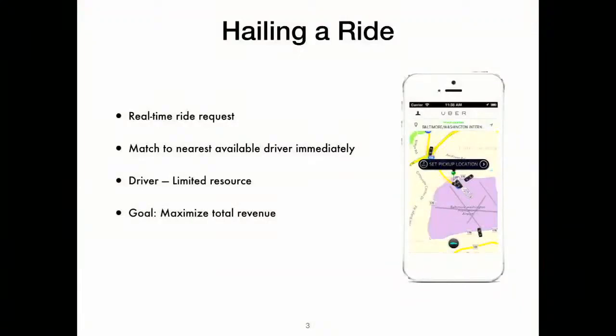Let's say you come to the Baltimore airport and you are looking for an Uber ride. You take up your Uber app and search for drivers. Uber is trying to make a real-time decision — at this point it has a limited pool of drivers, and it needs to match you to one of them. Of course it also has to make other decisions like what price to set. The goal from Uber's point of view is to maximize its revenue, but it's limited by the number of drivers it has, and it doesn't know a priori what all the requests are going to be.